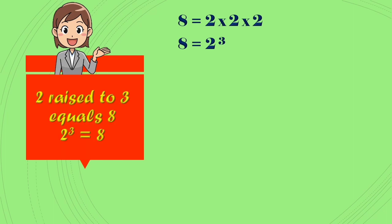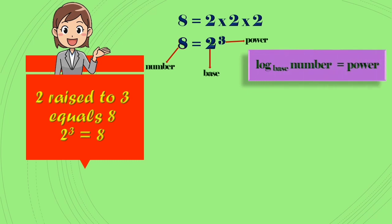We know clearly it is in the exponential form. See the notation: in this exponential form, 8 is the number, 2 is the base, and 3 is the power. Now if we convert it into logarithmic form, the notation must be like this: log of number base is equal to power. This is the notation in the logarithmic form. Just remember it, okay?